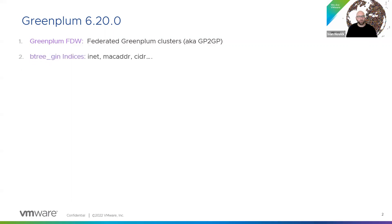Number two: Btree GIN indices. We already support Btree in GreenPlum, which is great for looking up and doing quick queries. What this new index does is it works on fancy data types like INET and MAC address — network data types and other complex data types. If you want to create an index and search for them, you can use Btree GIN indexes in GreenPlum 6.20.